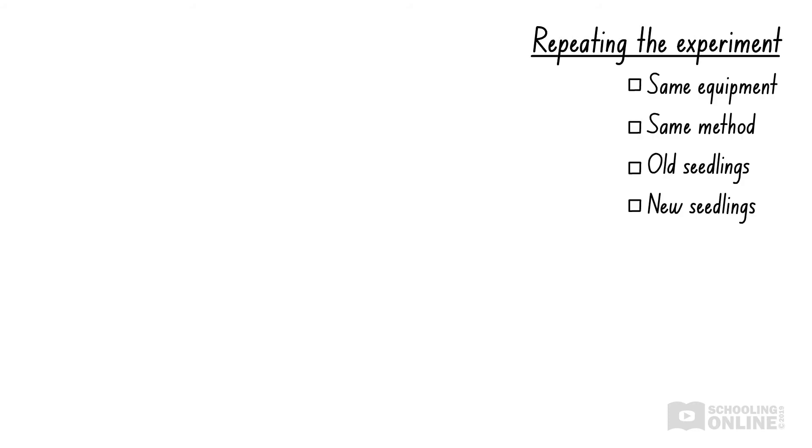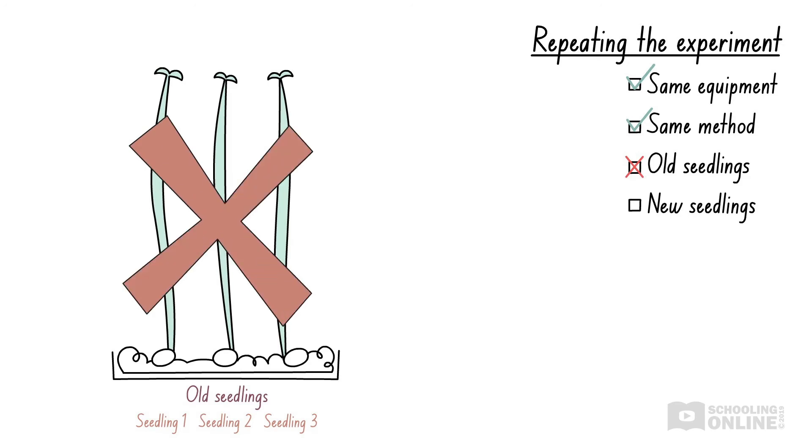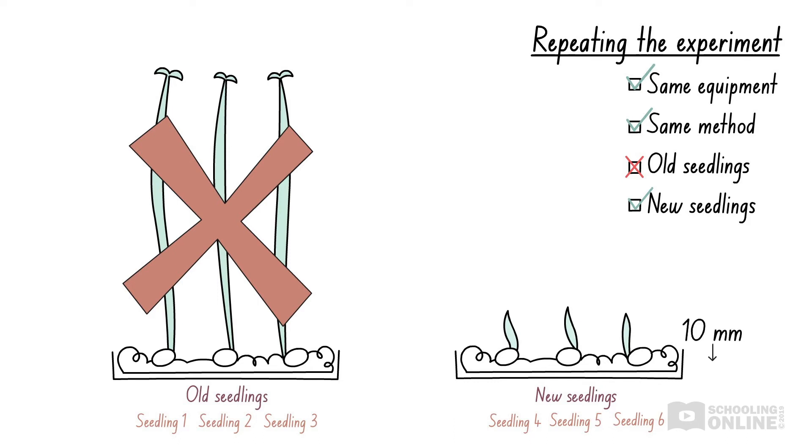In the following week, you decide to repeat the experiment and collect more data. You use the exact same equipment and method. However, you can't use the seedlings from last week as they've already grown taller. You need to ensure that the initial height of all seedlings remains constant, or the same, at 10 millimetres.